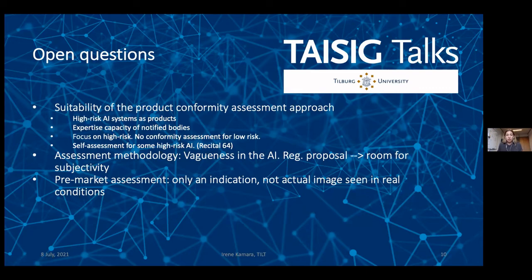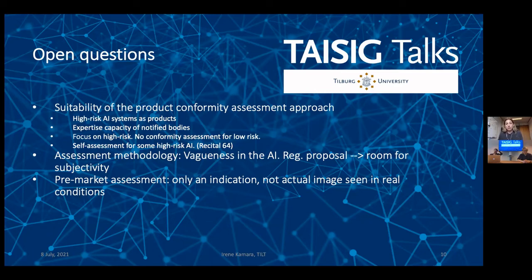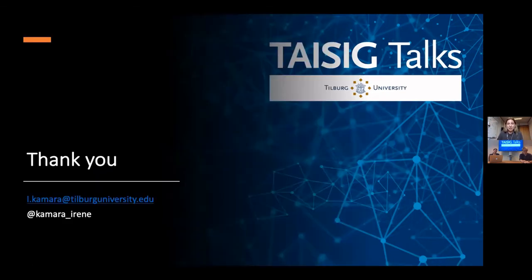I will close with some open questions and look forward to your input and brainstorming on answers. How suitable is this whole system of product conformity assessment — how can we see an AI system that poses high risks to fundamental rights simply as a product? What are we missing? How reliable can self-assessment be for these high-risk AI systems? And there are issues of assessment methodology: the assessment takes place on the basis of the intended use, not the actual use of the product. How can we be sure that, despite post-market surveillance measures, those rules will actually be implemented and followed? Thank you very much for your attention.